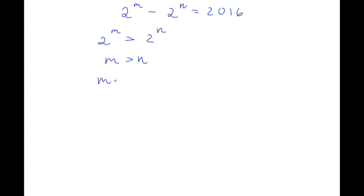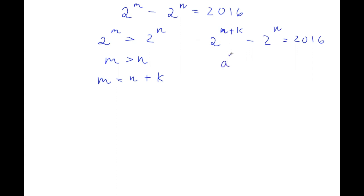So now I'm going to set m equal to n plus some constant k. If I plug in n plus k for m, I have 2 to the power of n plus k minus 2 to the power of n is equal to 2016. Now 2 to the power of n plus k is in the form a to the power of m plus n, which simplifies to a to the power of m times a to the power of n. So 2 to the power of n plus k equals 2 to the power of n times 2 to the power of k, minus 2 to the power of n, equals 2016.